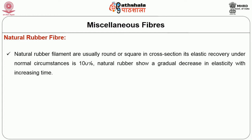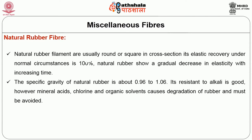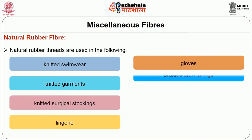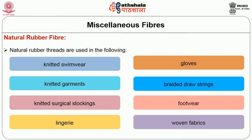Vulcanized rubber, when stretched, extends many times its original length and snaps back when the force is removed. Natural rubber filaments are usually round or square in cross section. Its elastic recovery under normal circumstances is 100%. Natural rubber shows a gradual decrease in elasticity with increasing time. The specific gravity of natural rubber is about 0.96 to 1.06. Its resistance to alkali is good. However, mineral acids, chlorine and organic solvents cause degradation of rubber and must be avoided. Natural rubber threads are used in knitted swimwear, knitted garments, knitted surgical stockings, lingeries, gloves, braided draw strings, footwear, and woven fabrics. Fabrics designed with rubber yarns tend to improve the overall garment fit.